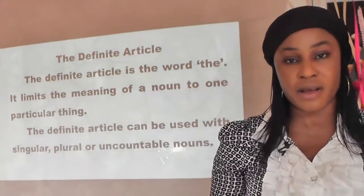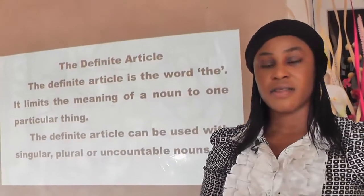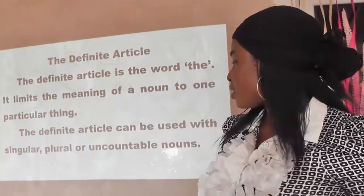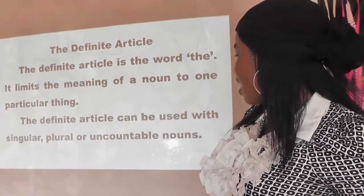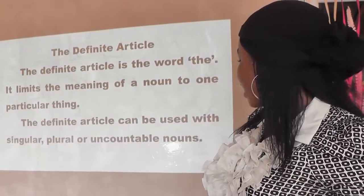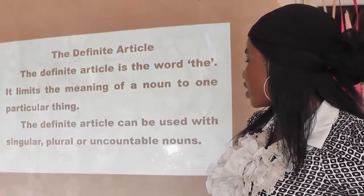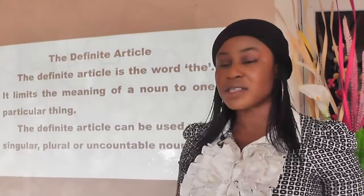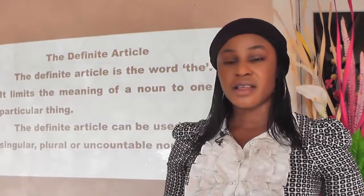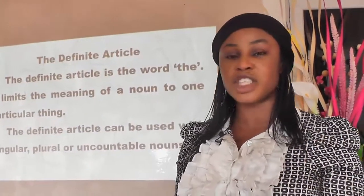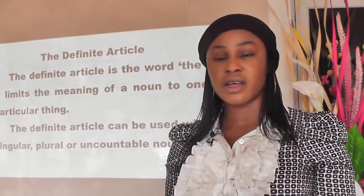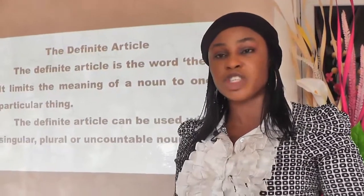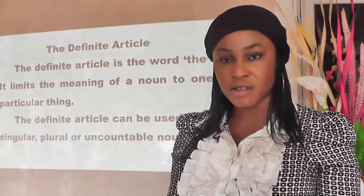For example: 'the boy' — singular; 'the boys' — plural. We can also use it with uncountable nouns: 'the information,' or 'the piece of information given today.' Articles come before nouns, whether they are singular, plural, or uncountable.